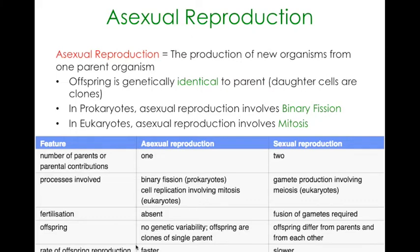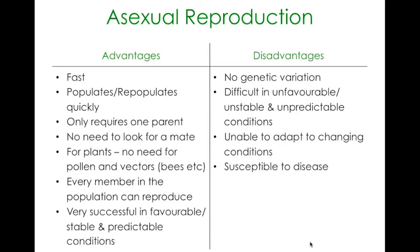The rate of offspring production is faster in an asexual reproductive system compared to a sexually reproductive system. Now, advantages and disadvantages. With only one parent and a quick process without involving egg and sperm, the advantages of asexual reproduction are that it's fast. Because it's fast, an organism that reproduces asexually can populate and repopulate quickly. You only need one parent — you don't need to look for a mate.